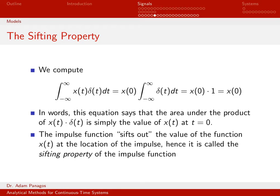In other words, what this equation says is that the area under this product is simply equal to the value of my underlying signal at time zero. Another way of saying it is that this impulse function has sifted out one particular value of my function.